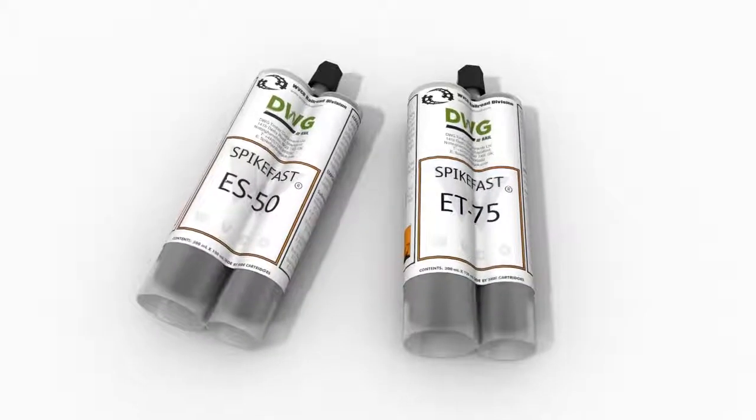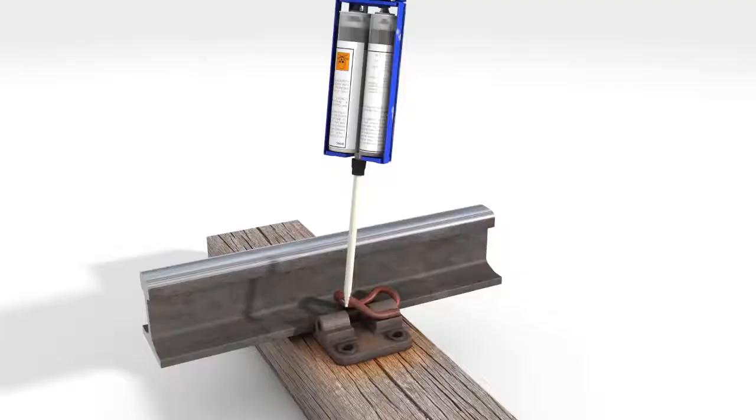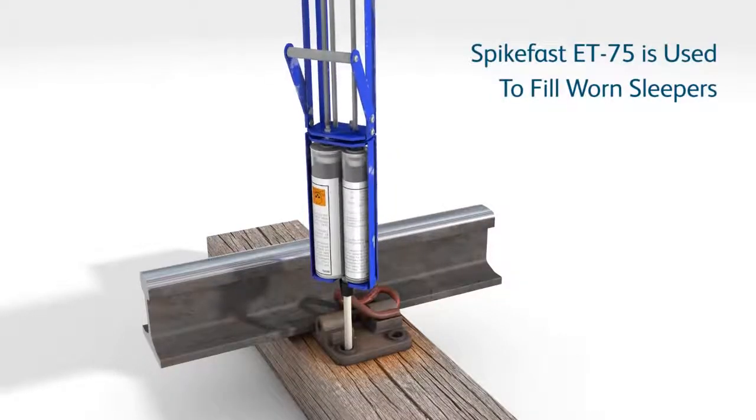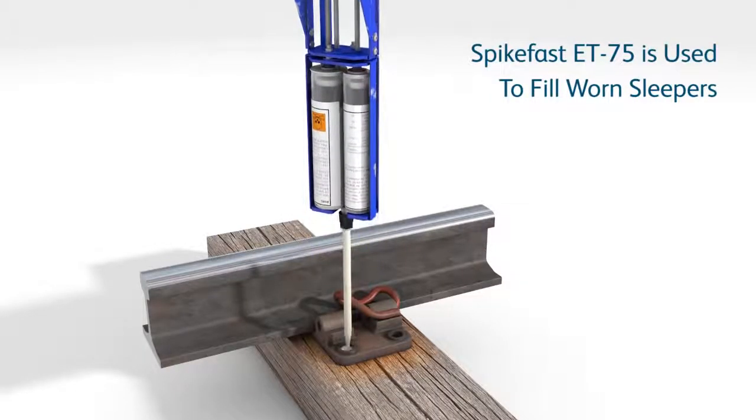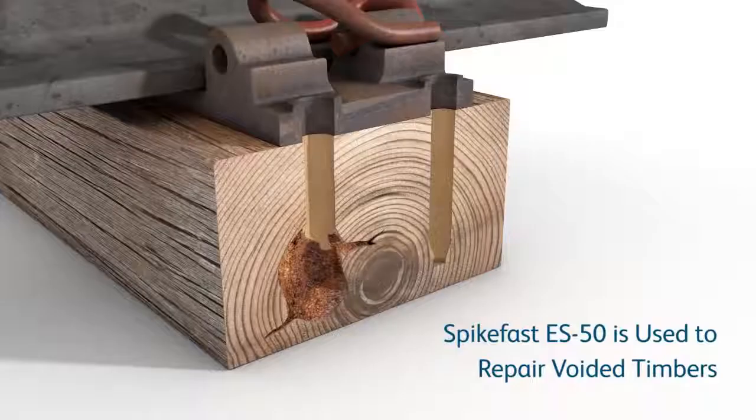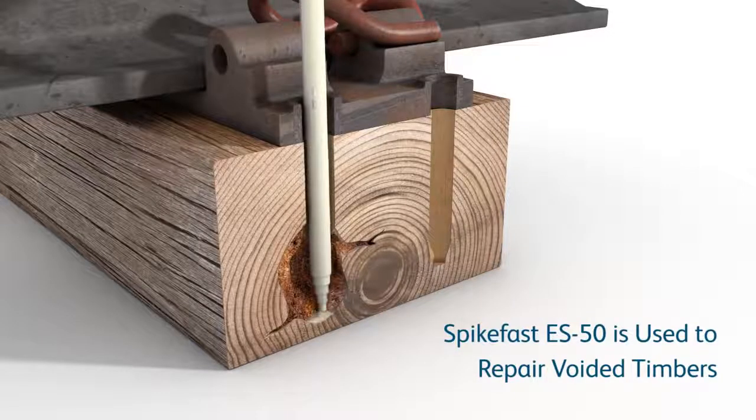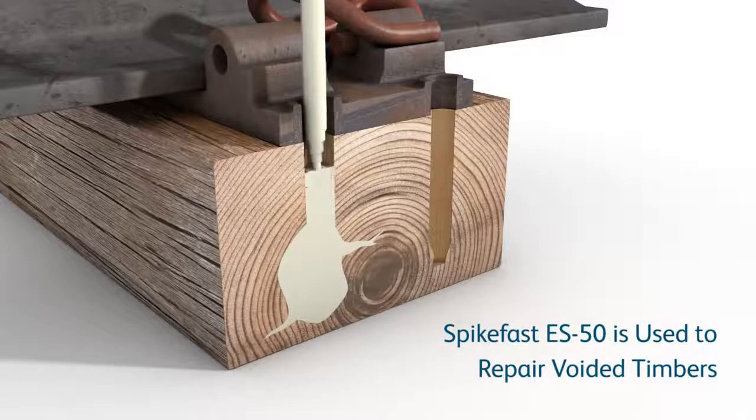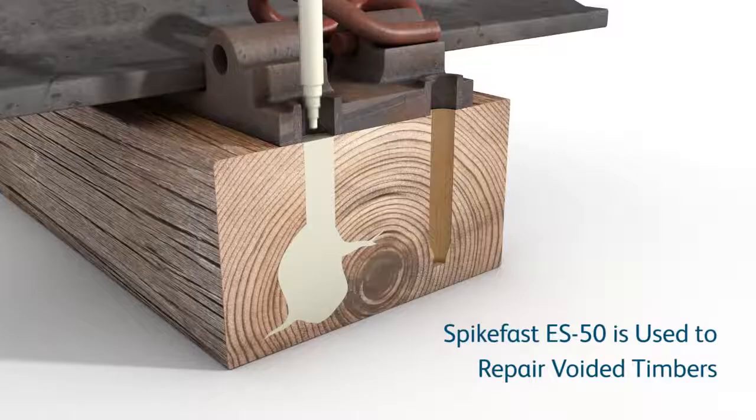SpikeFast is available in two different formulae. SpikeFast ET75 is used to fill worn screw holes on sleepers and timbers, while SpikeFast ES50 is more fluid and is suitable for repairing voided timbers and splits as it flows more freely.